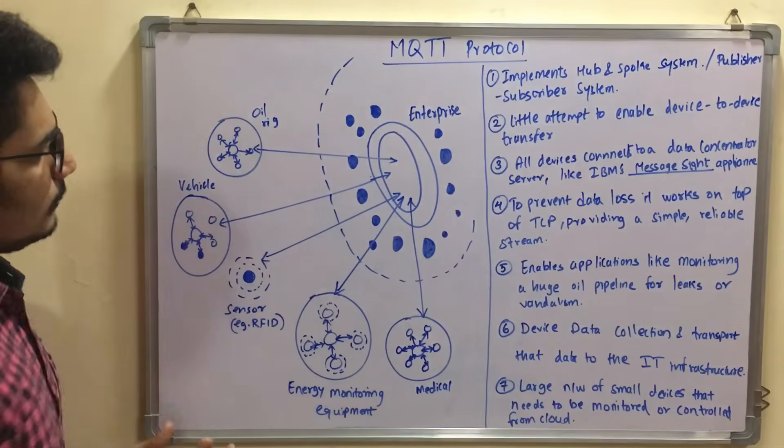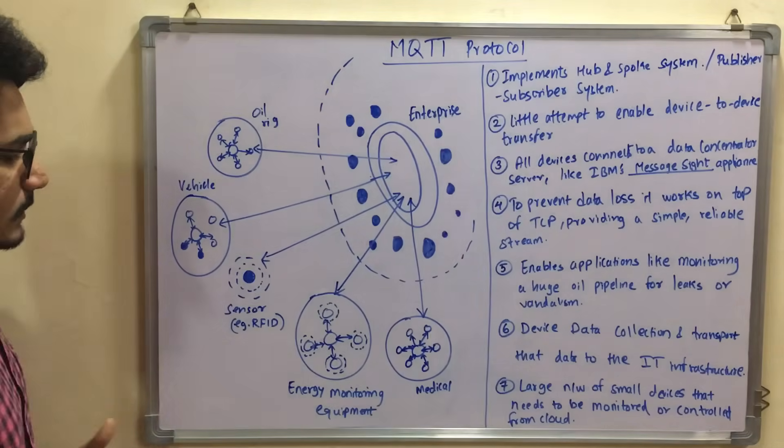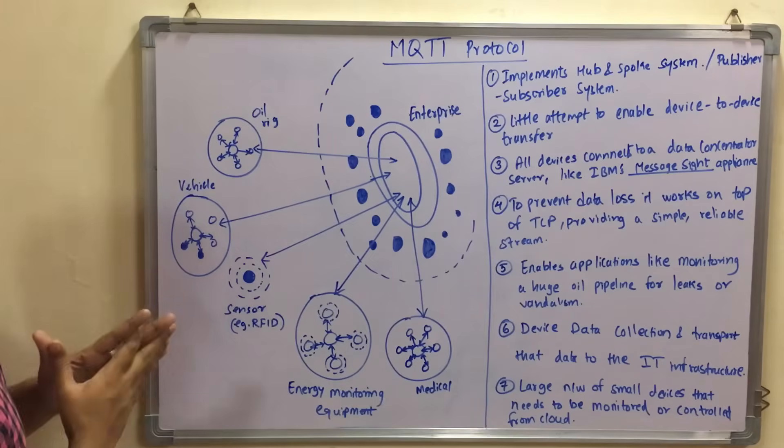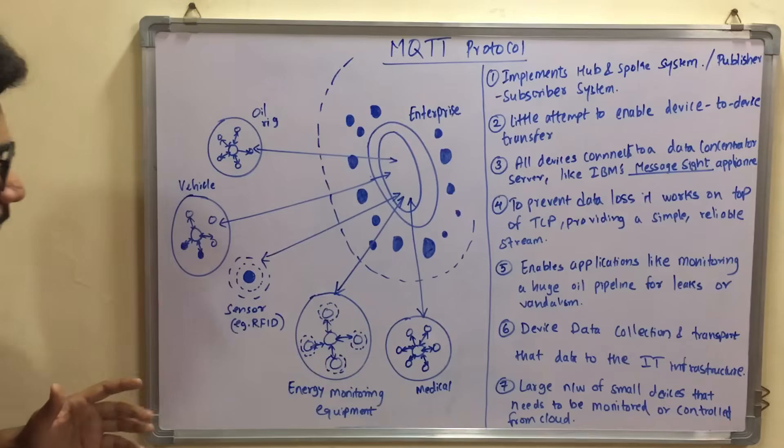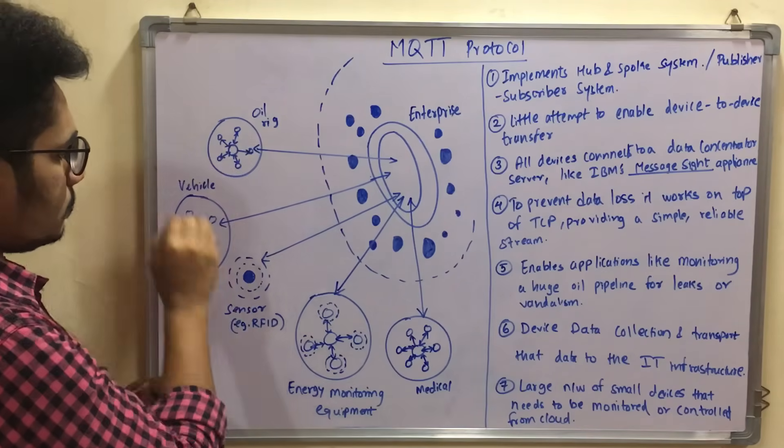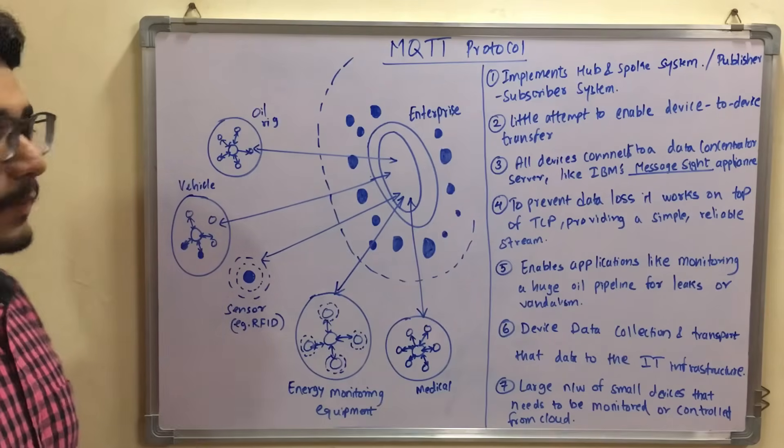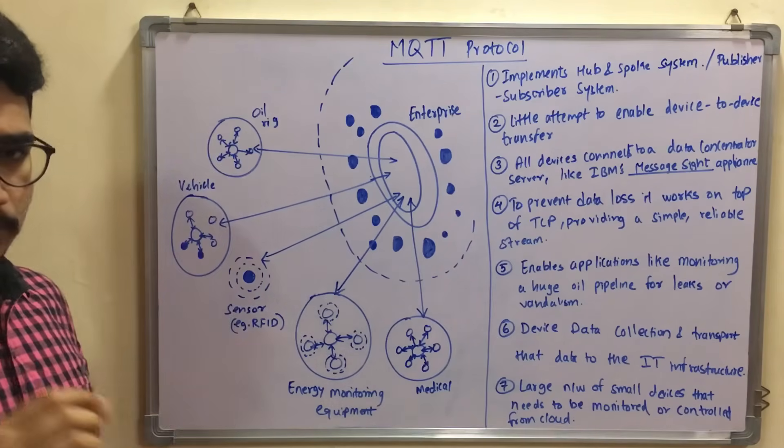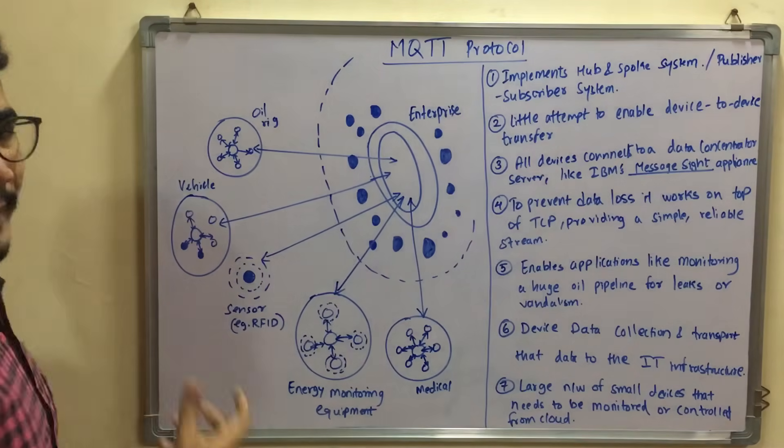So each of these oil rigs, vehicles and sensors, RFID, energy equipment monitoring and medical, you get to see small rings or small circles. These are nothing but basically the entities or the objects which are inside this, and like different parameters or different attributes to all these clusters.